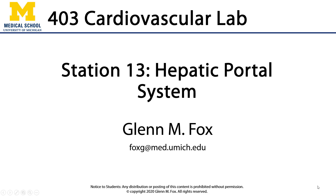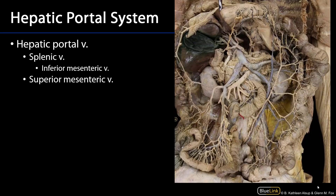Let's talk about the hepatic portal system. The hepatic portal system is a venous system that drains the gastrointestinal tract from the abdominal part of the esophagus through to the rectum. So the entire pathway of the gut tube drains its blood into various tributaries of this venous system.